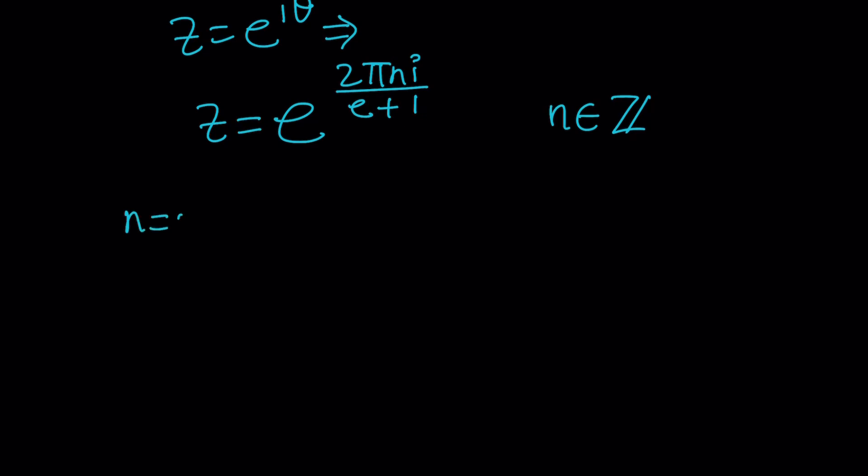For example, can n be 0? Absolutely. That will give you Z equals e to the power 0, which is 1. Definitely that's going to be one of the solutions. Notice that if you look at the original problem Z to the e equals Z bar, the conjugate of 1 is 1, and 1 to the power e is also 1, so this will work. If n is equal to 1, we're going to get Z equals e to the power 2 pi I over e plus 1. In other words, we have infinitely many solutions.